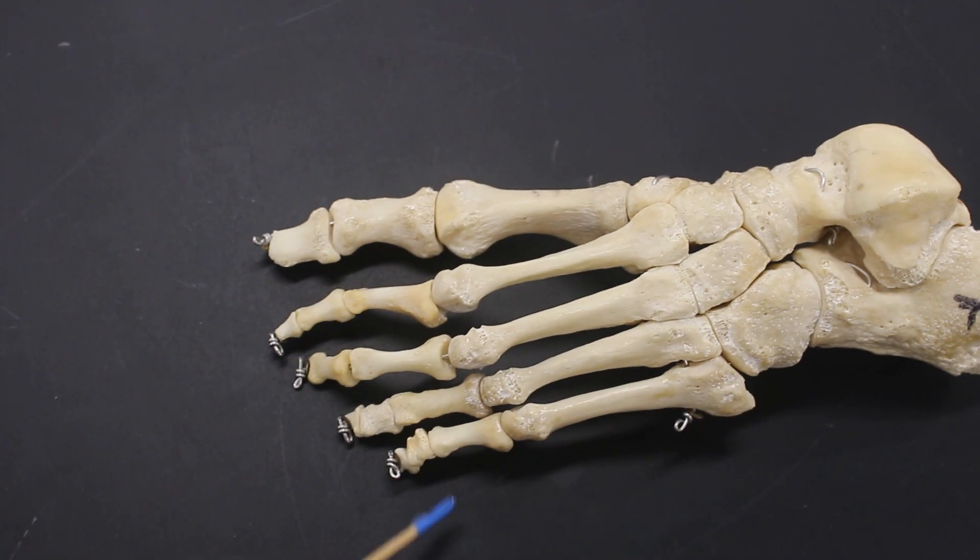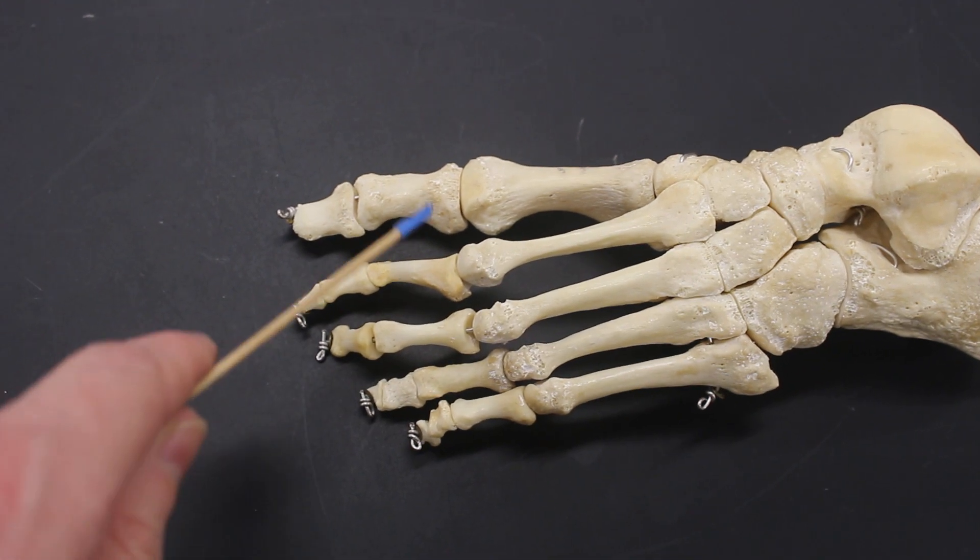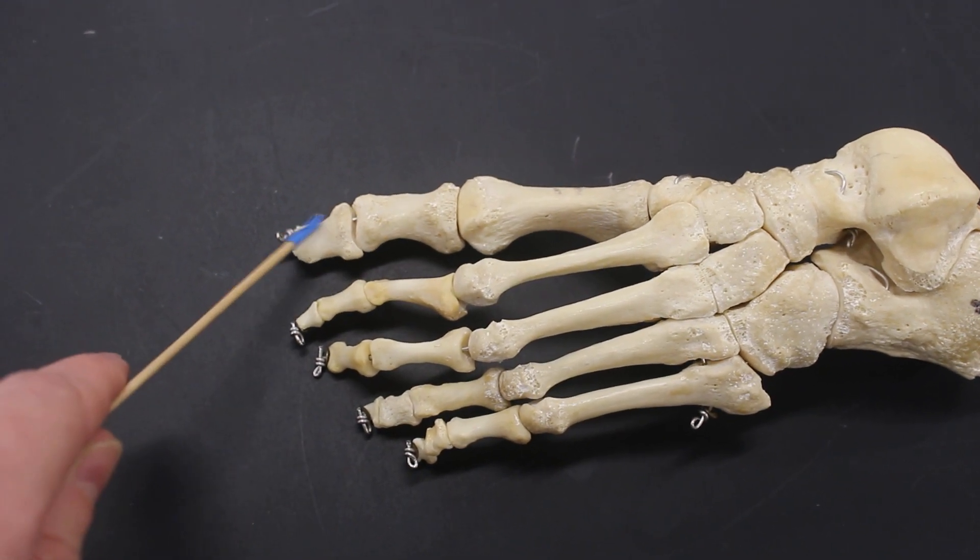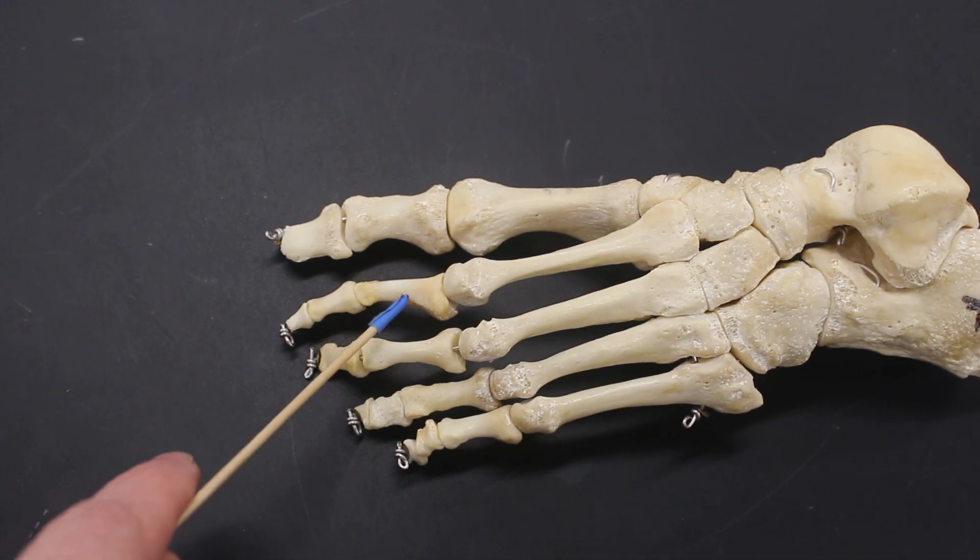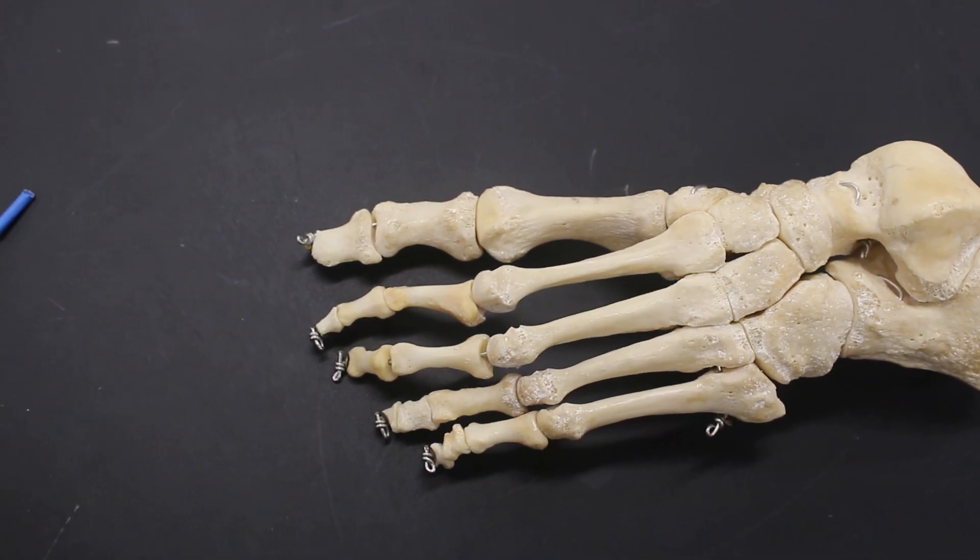And these small bones up here are the phalanges. 14 phalanges. A proximal and distal phalange for the great toe, and a proximal, middle, and distal phalange for all the other toes.